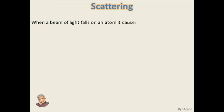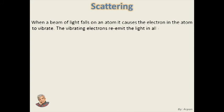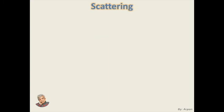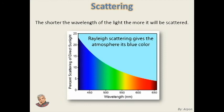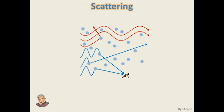When a beam of light falls on an atom, it causes the electrons in the atom to vibrate. The vibrating electrons re-emit the light in all directions — this is called scattering. Scattering of light depends on its wavelength. The shorter the wavelength of light, the more it will be scattered. In the chart, the percentage of scattering increases from red light to violet light, because red light has the longest wavelength while violet light has the shortest. As the wavelength of blue light is shorter than that of red light, blue light scatters more than red light — this is the reason for the bluish sky during the day and the reddish sky during sunrise and sunset.